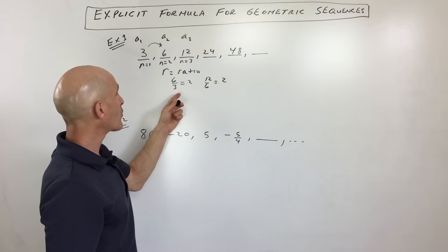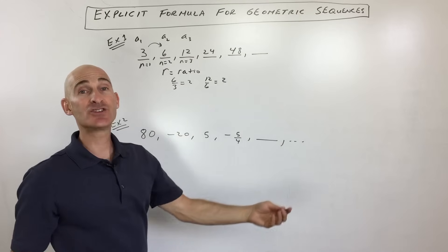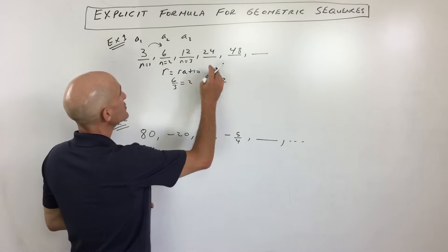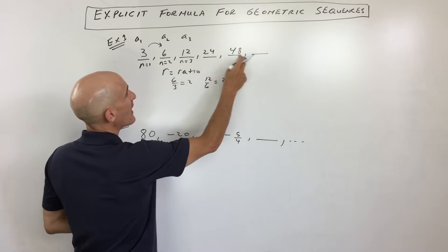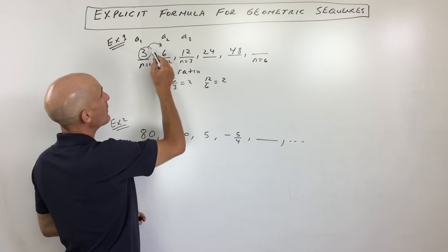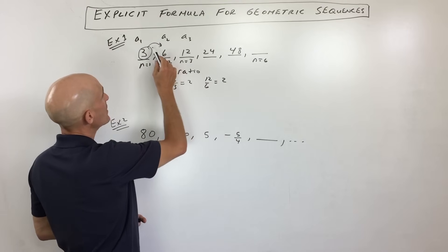So now the question is, how do we get a formula for any term in this geometric sequence? Well, what you can think about is, let's look at this over here. If we want to find the sixth term, n equals 6, we would start at 3, right? And we would multiply by our ratio, 2. That's our common ratio.